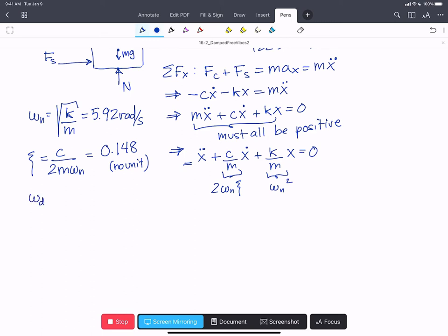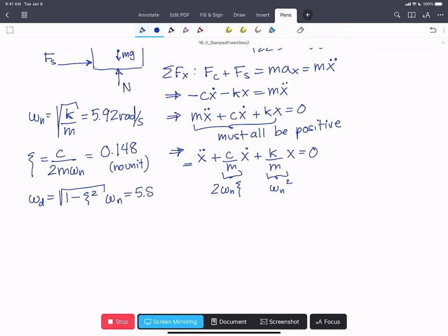And then we can find omega d, the damped natural frequency. That's going to be 1 minus zeta squared times omega n, and we get a value of 5.85 rads per second for that one. So the damped natural frequency is always a little bit less than the natural frequency, and that means the period of a damped motion will be less than the period of the same system without damping.